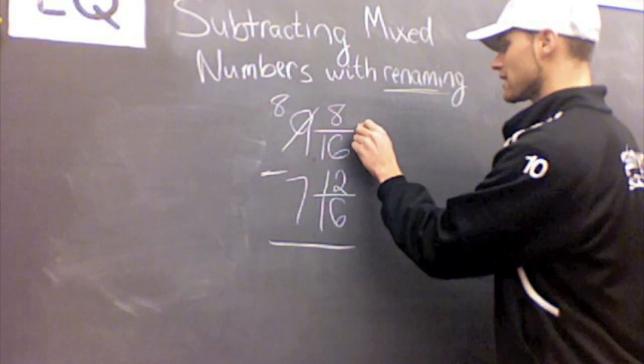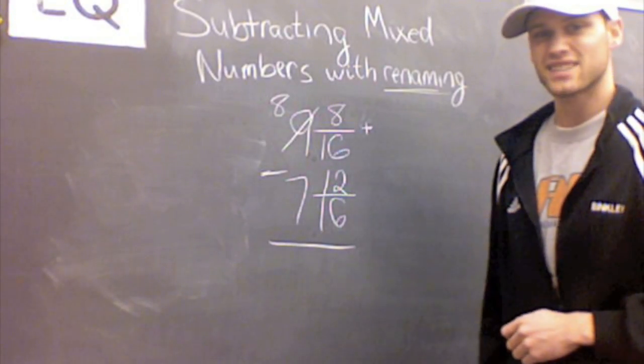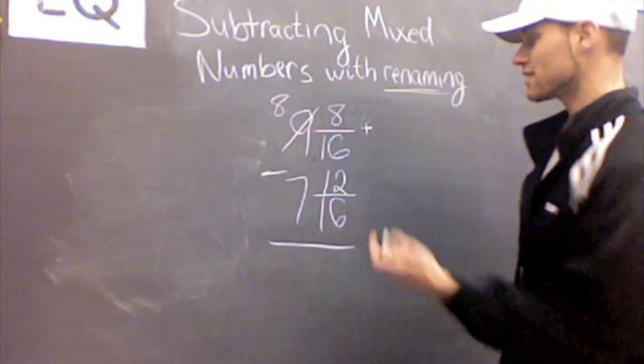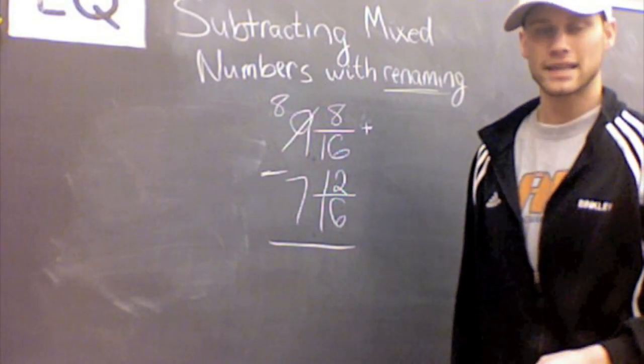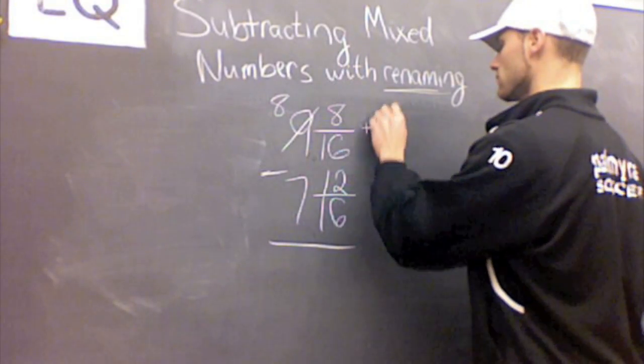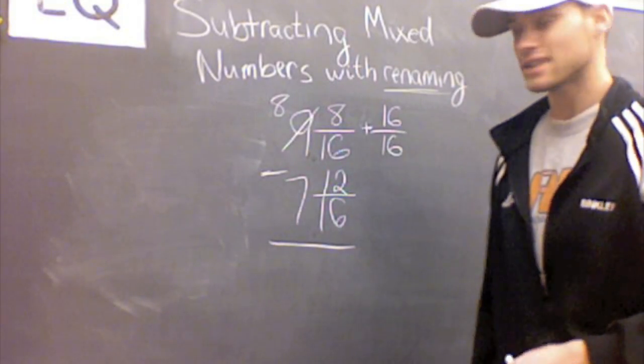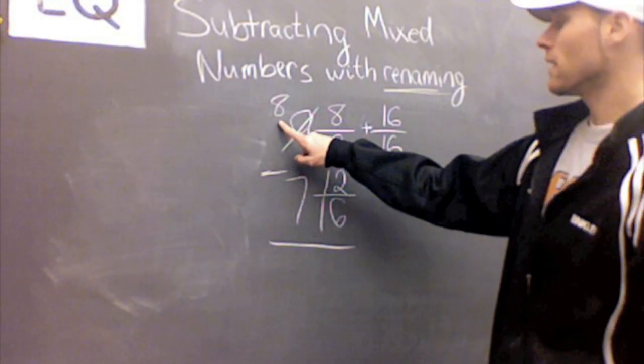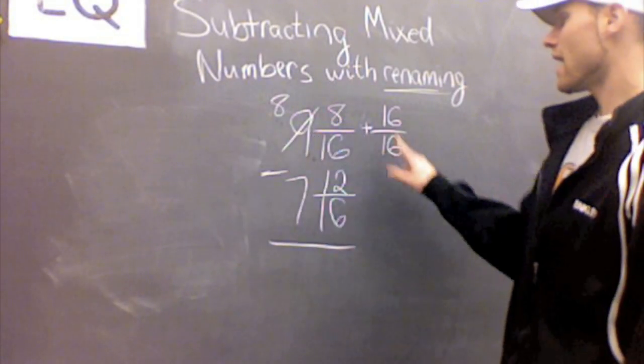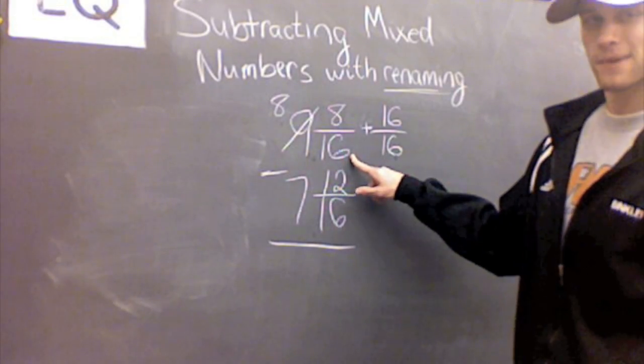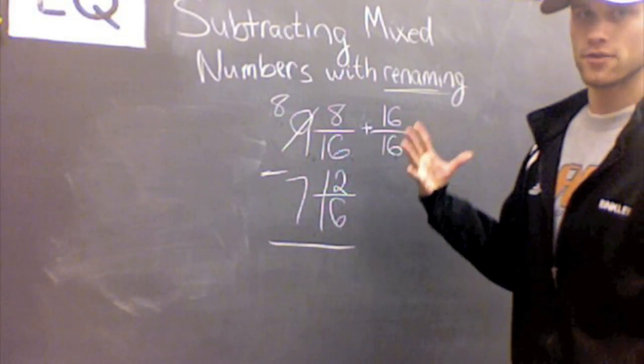So in this case, I'm going to pick 16 sixteenths because my denominator is 16. It's going to make it really easy for me to add. So I picked 16 sixteenths again because we took one whole out of the 9, made it an 8, adding it to my numerator so I can subtract and have a bigger numerator.